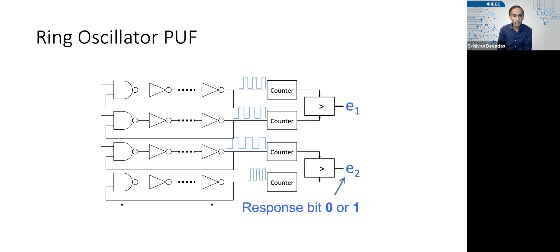So let these ring oscillators run for a while, and keep a count of how many times they oscillated, and decide to generate a random bit, e₁, for example, based on comparing the frequencies of the top two adjacent ring oscillators, generate a second bit based on comparing the third and fourth ring oscillators, etc.